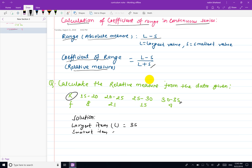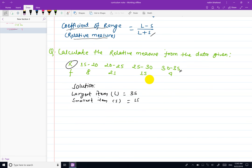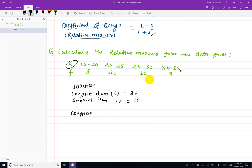The coefficient of range equals L minus S divided by L plus S. So L minus S, 35 minus 15, divided by 35 plus 15, equals 20 divided by 50, which equals 0.4. So that's the coefficient of range for the continuous series relative measure.